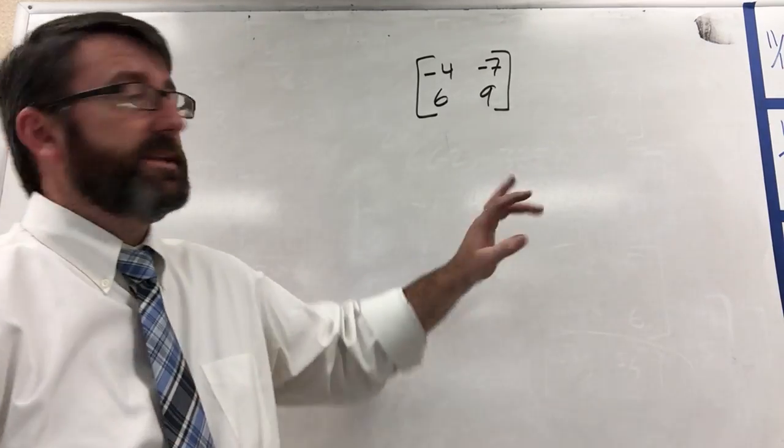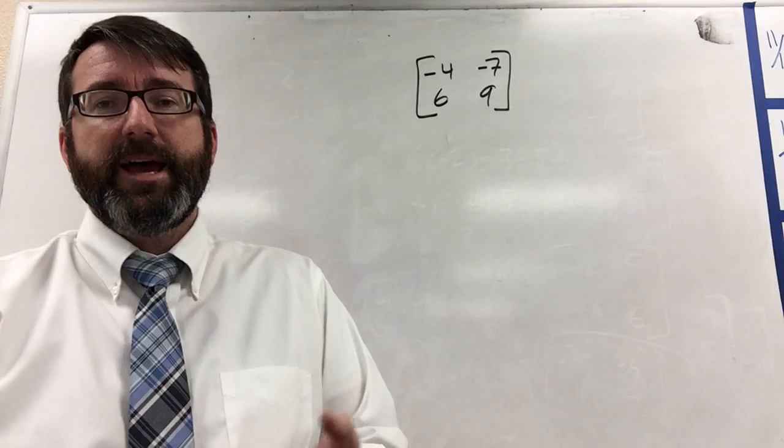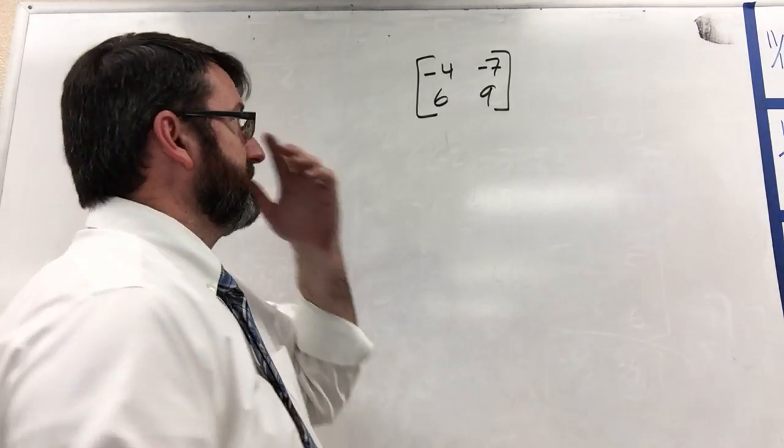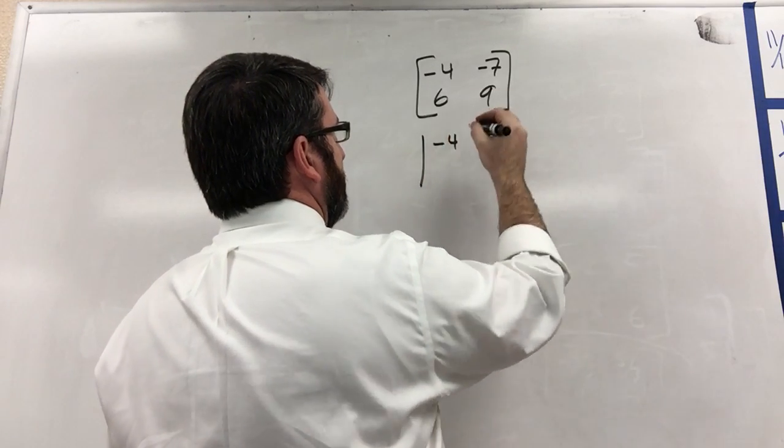For number 37, we're given this matrix and we're asked to find the determinant of the matrix first, and then if the inverse exists, to find the inverse. So let's first find the determinant of this matrix.